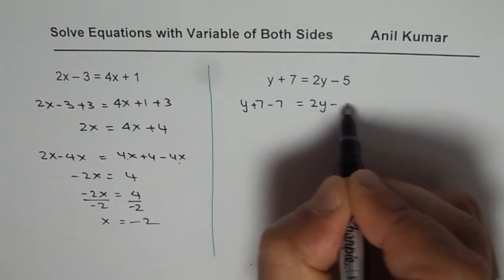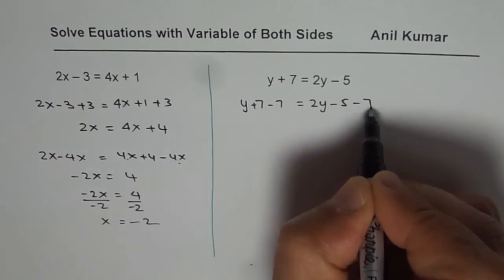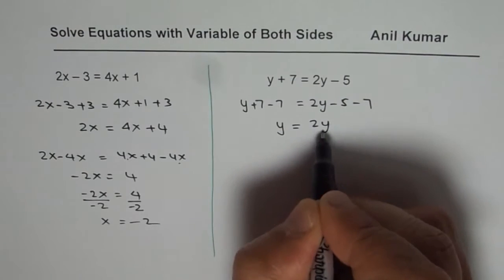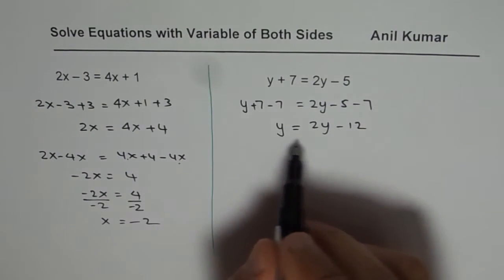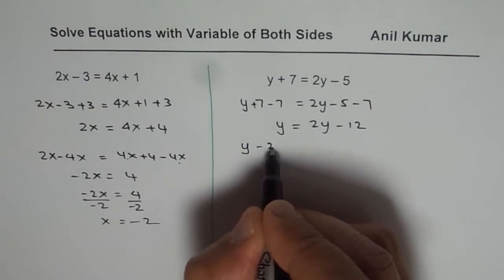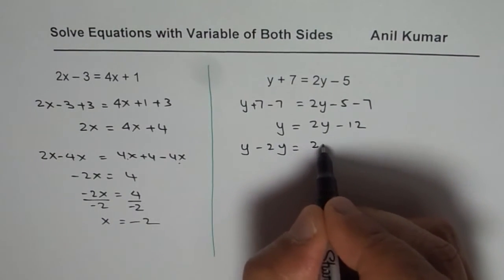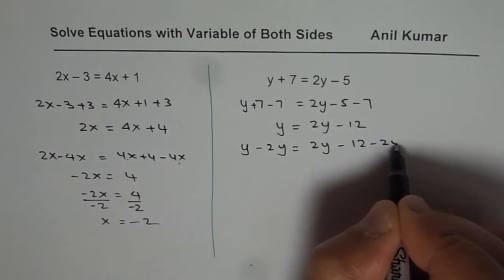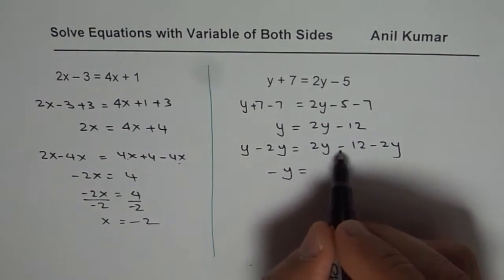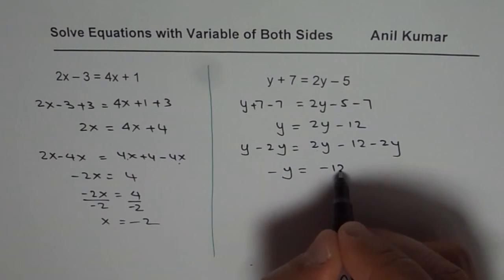So we have y plus 7 minus 7 equals 2y minus 5 minus 7. So on the left side, we're left with y. On the right side, 2y minus 12. Now we will take away 2y from both sides so that we have only variables on the left side. So minus 2y. That gives us minus y equals to 2y minus 2y is 0 minus 12.